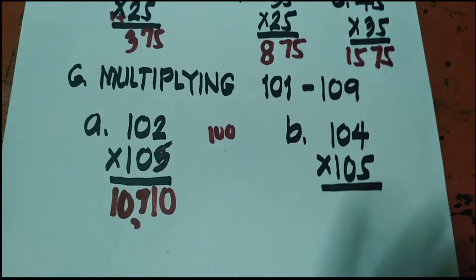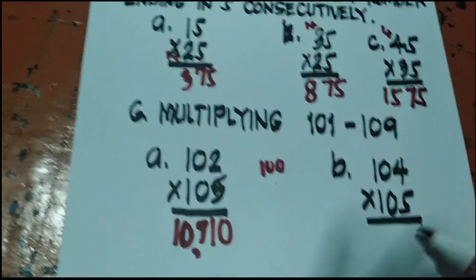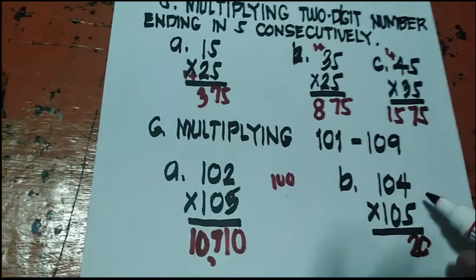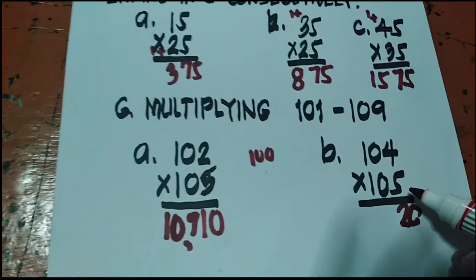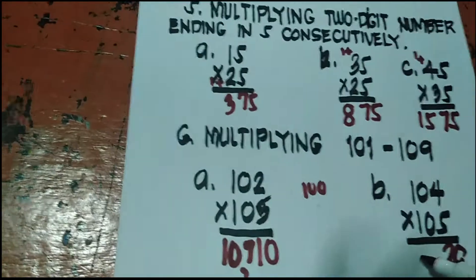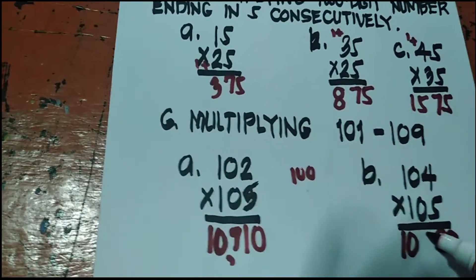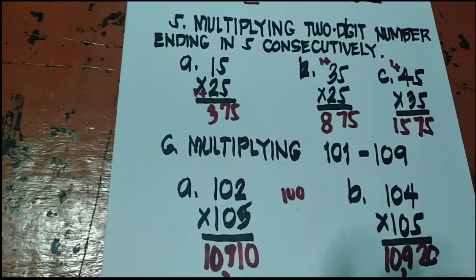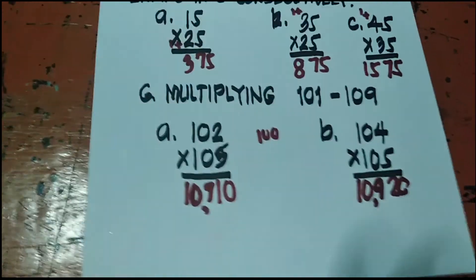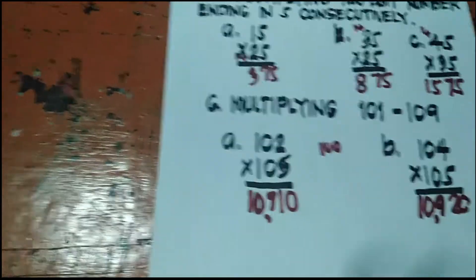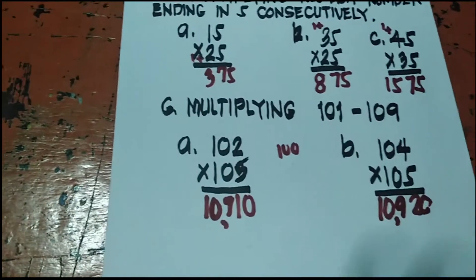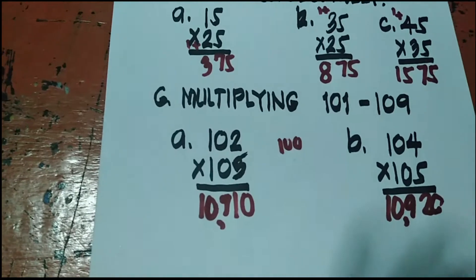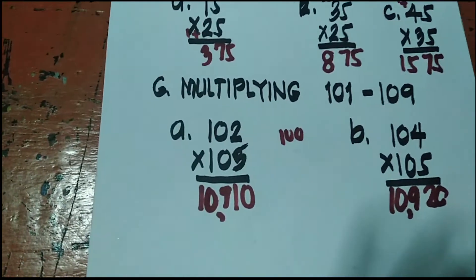104 times 105. So 5 times 4 is 20. Then 4 plus 5 is 9 plus 100. So 10,920. Naiintindihan ba natin yung mga pinag-aralan natin yung shortcut? Pwede mong magamit ito sa mga mental computation, mga pabilis sa mga pabilisan, mga kag-increasure, ganoon. Hanggang sa susunod ulit.